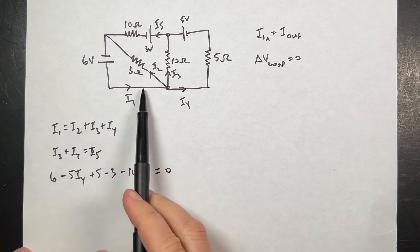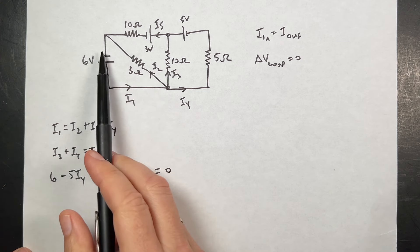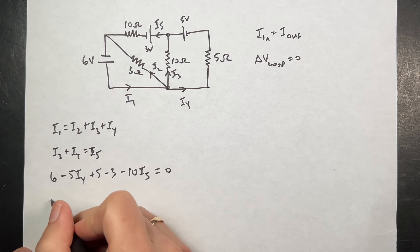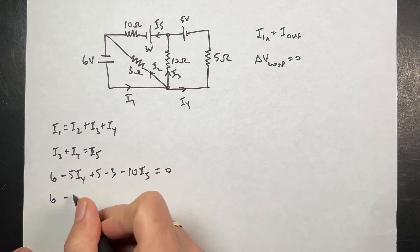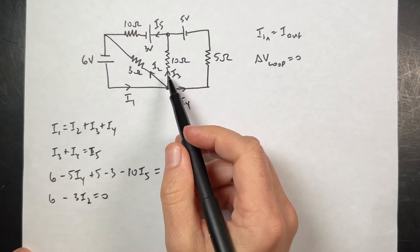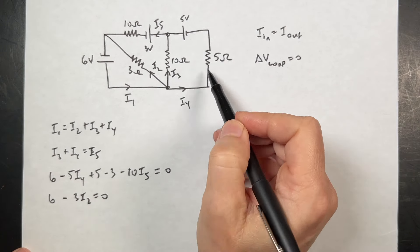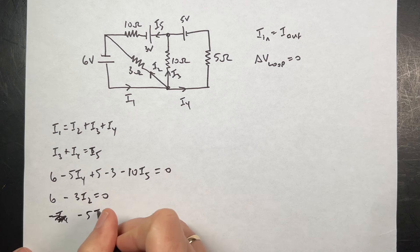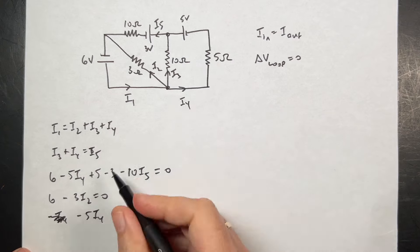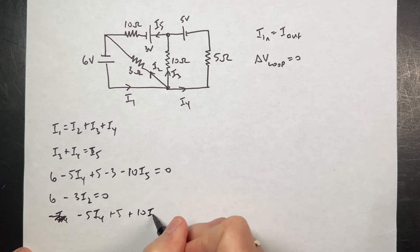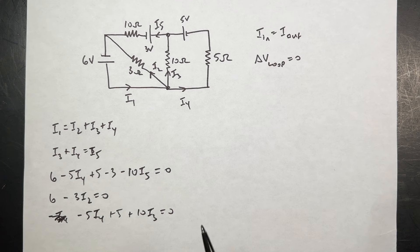I need another equation. I'm going to do this one right here. And then let's try this one. So I'm going to do this one. I get six minus three I2 equals zero. That one's easy. And then over here, if I go this way, I get minus I4. I'm going to write it like this, minus five I4, that's that, plus five. And then plus 10 I3 equals zero, because I'm going in the opposite direction. So I have five equations, five unknowns.